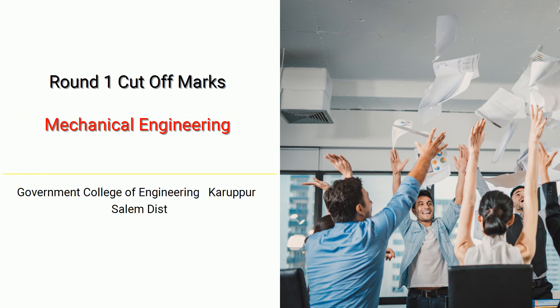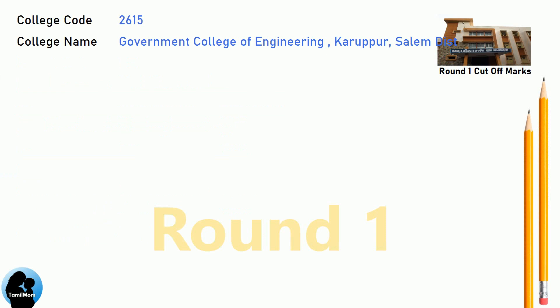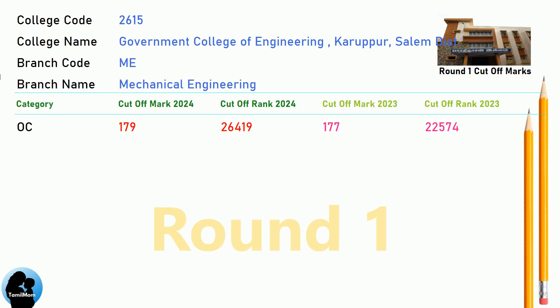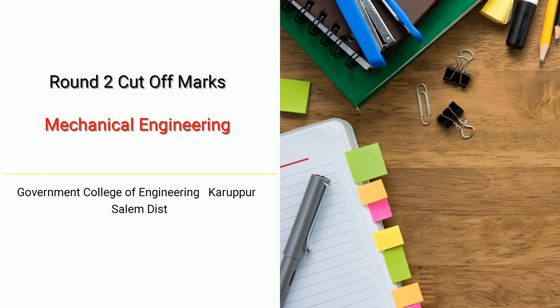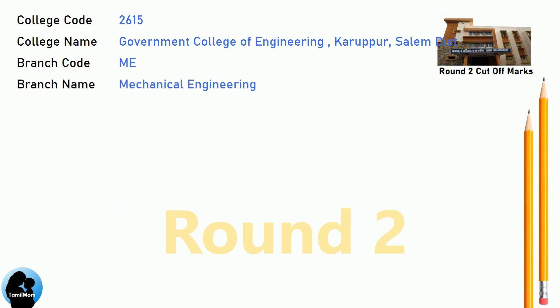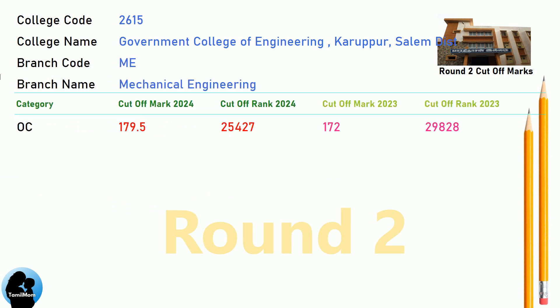DNEA Round 1 Cut-off for Government College of Engineering, Karupur, Salem District in Mechanical Engineering. DNEA Round 2 Cut-off for Government College of Engineering, Karupur, Salem District in Mechanical Engineering.